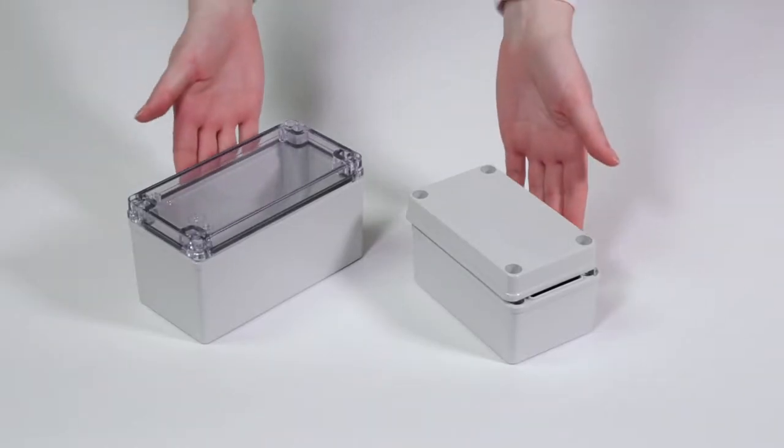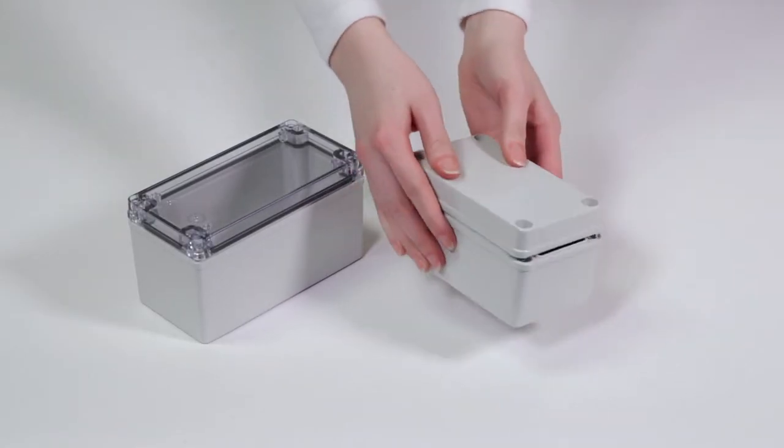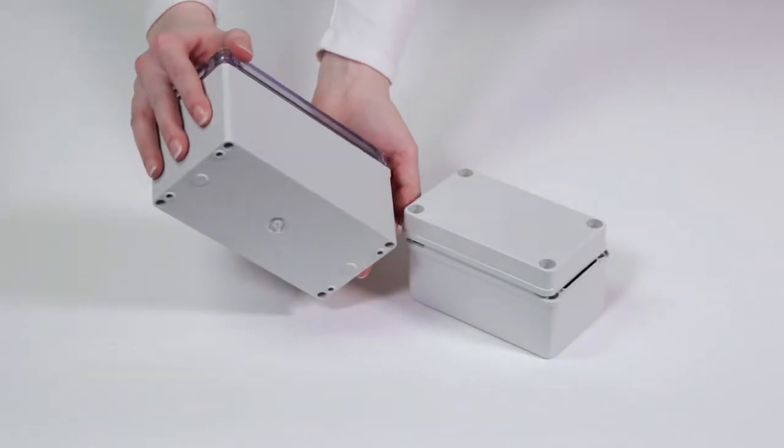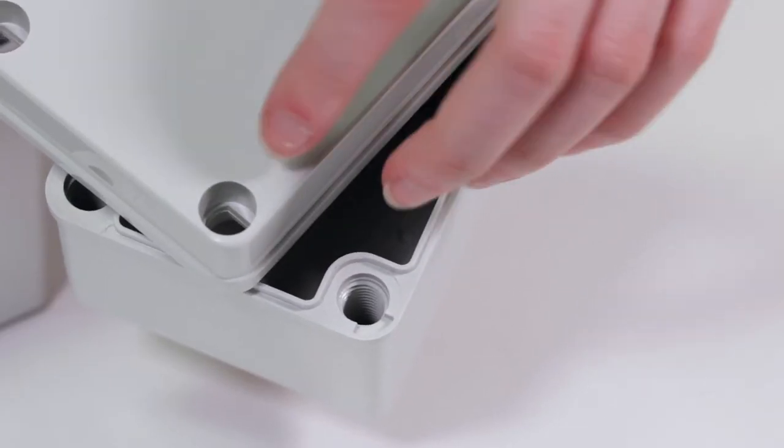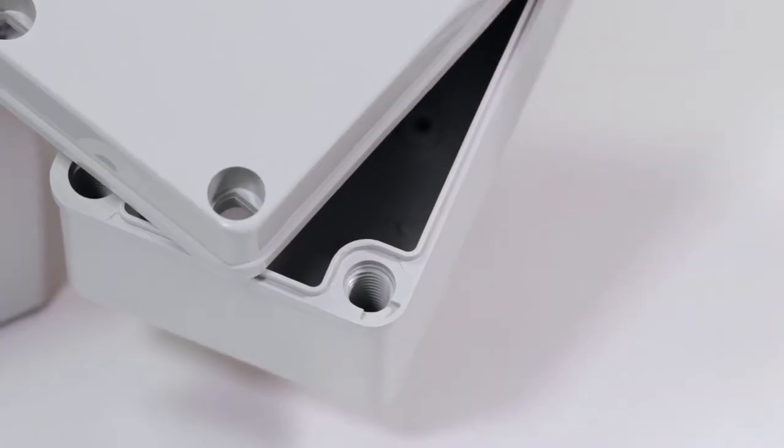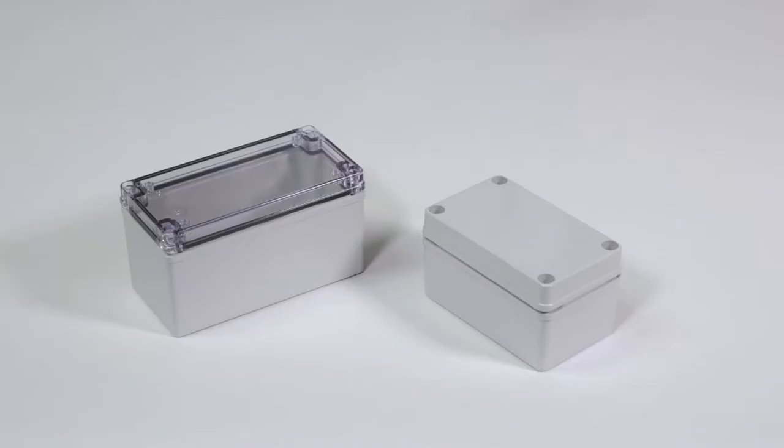The IP67 enclosures offer extremely robust protection and long life, having bodies made of polycarbonate plastic with 10% glass fibers. The screw down cover is constructed of polycarbonate and features non-metallic screws and is available in either clear or opaque covers.